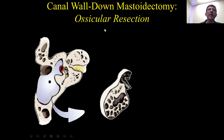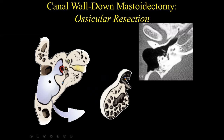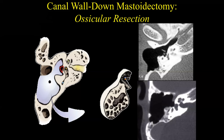In very extensive cholesteatomas, they can perform a canal wall down mastoidectomy with ossicular resection, sometimes referred to as a radical mastoidectomy. In this case, the mastoid air cells have been removed, the posterior wall of the external auditory canal is taken down, and the ossicles are resected, though the anterior and posterior cruses of the stapes may be maintained. When the tympanic membrane is reconstructed to lay on the stapes, this is referred to as a type 3 tympanoplasty.